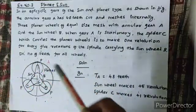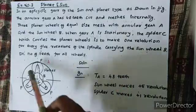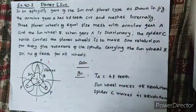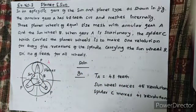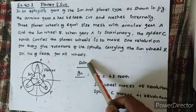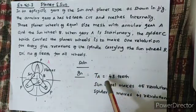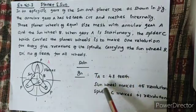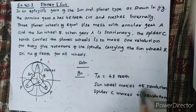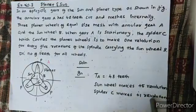We need to define the number of teeth for all wheels. So we will see the data: TA = 48 teeth, sun wheel makes 5 revolutions, spider C makes 1 revolution.